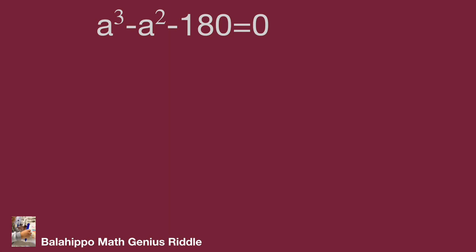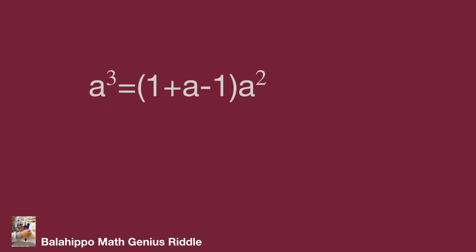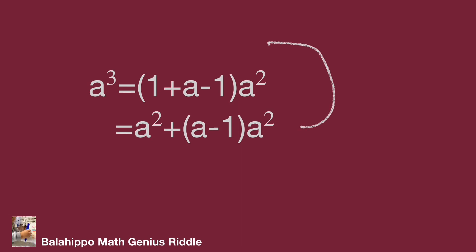From the given equation, a³ minus a² minus 180 equals 0. Moving minus a² minus 180 to the right side, the equation becomes a³ equals a² plus 180. I am going to handle a³ and a². Let a³ equal to (1 plus a minus 1) times a², which equals a² plus (a minus 1) times a².